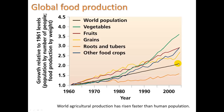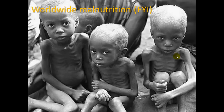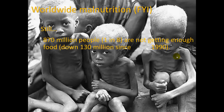The population has not risen as quickly as our ability to produce food. Yet, despite that, we still have worldwide malnutrition. 870 million people, or about 1 in 8, are not getting enough food. And this is down — fortunately, it's down 130 million since 1990 — so there's progress being made.